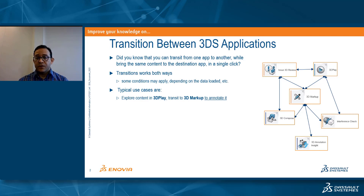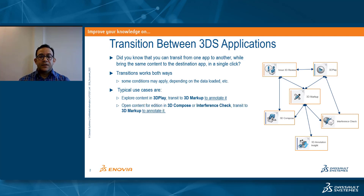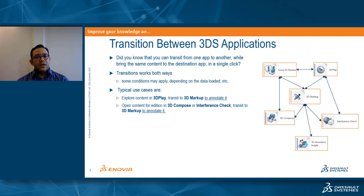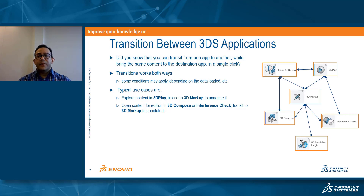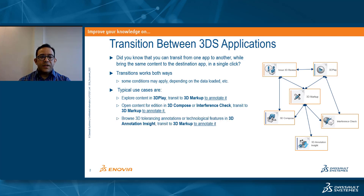I capture this content, I can create slides, and I can do more advanced capabilities using 3Dmarkup. A similar use case is when we are exploring and editing content in 3Dcompose, or reviewing interferences created in CATIA that are displayed in the Interference Check web app. Again, we can translate to 3Dmarkup so that I can annotate this content and add more information around these interferences or the products and parts I have been exploring or editing in 3Dcompose.